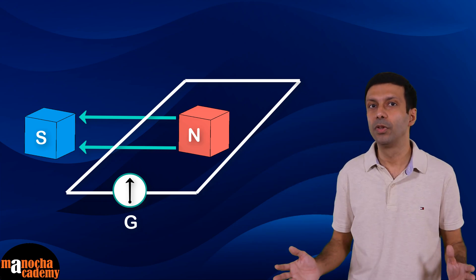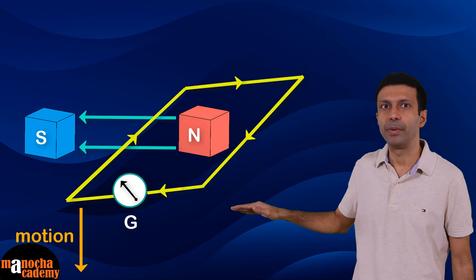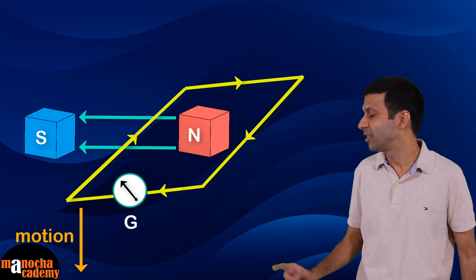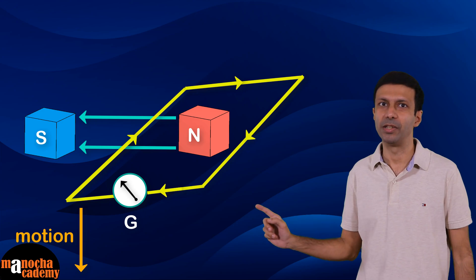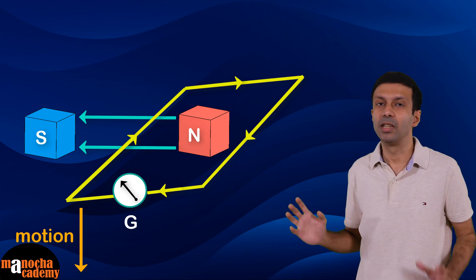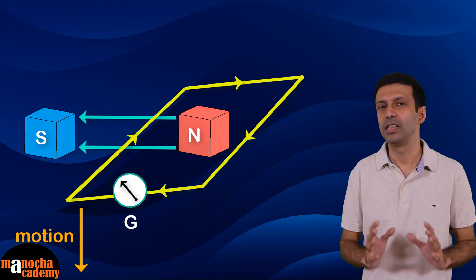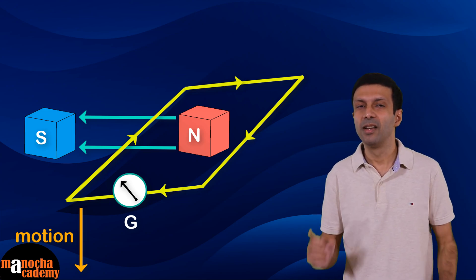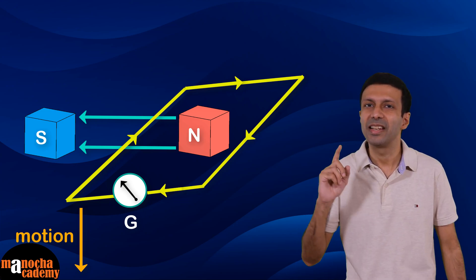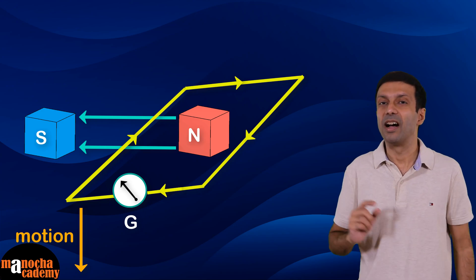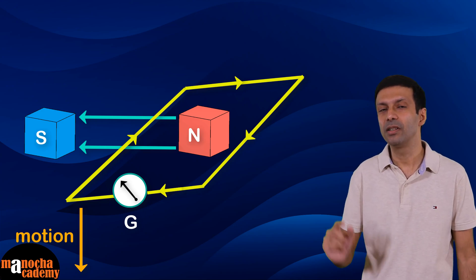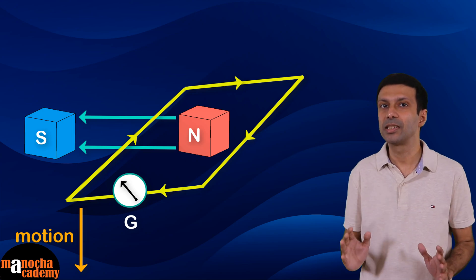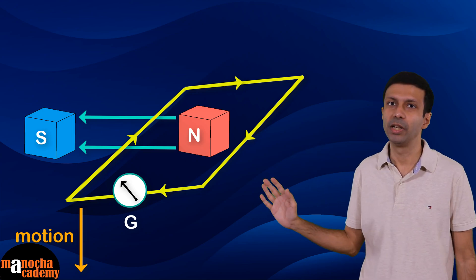If we move the wire downwards rapidly between the poles of the horseshoe magnet, again there is a deflection in the galvanometer, but now in the opposite direction. So electric current is produced in the wire, but the direction is opposite. Again, the deflection lasts only as long as there is motion in the wire.